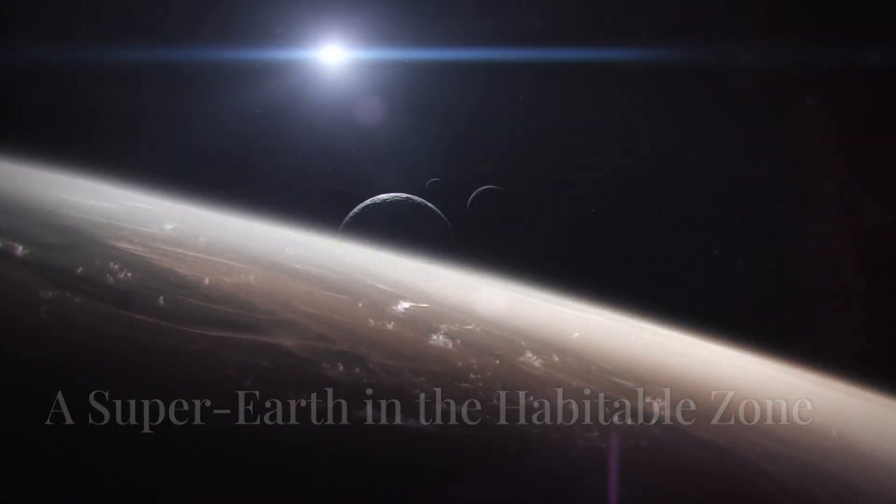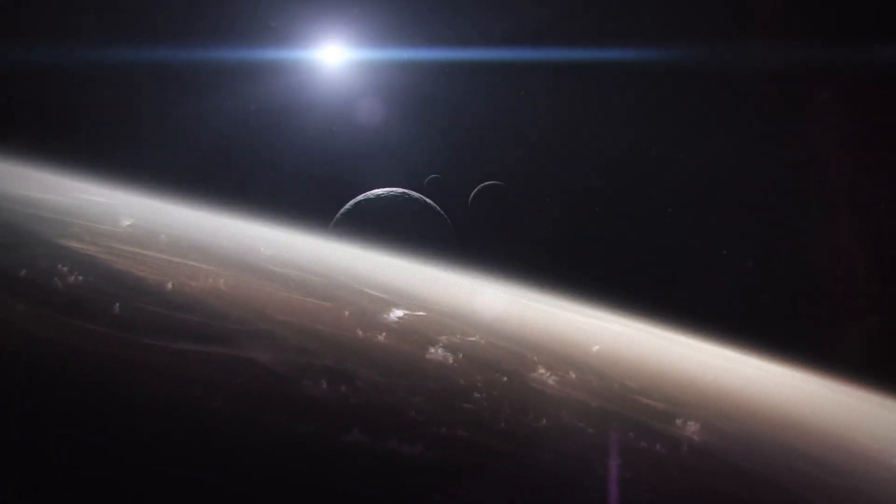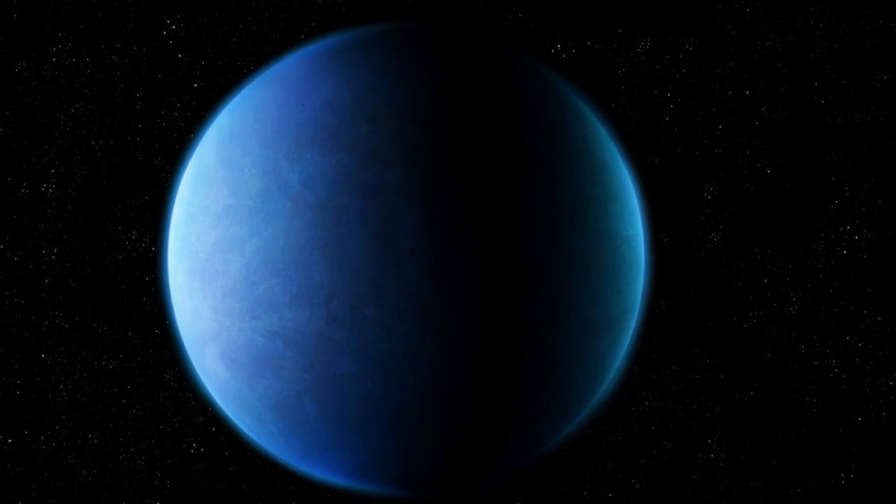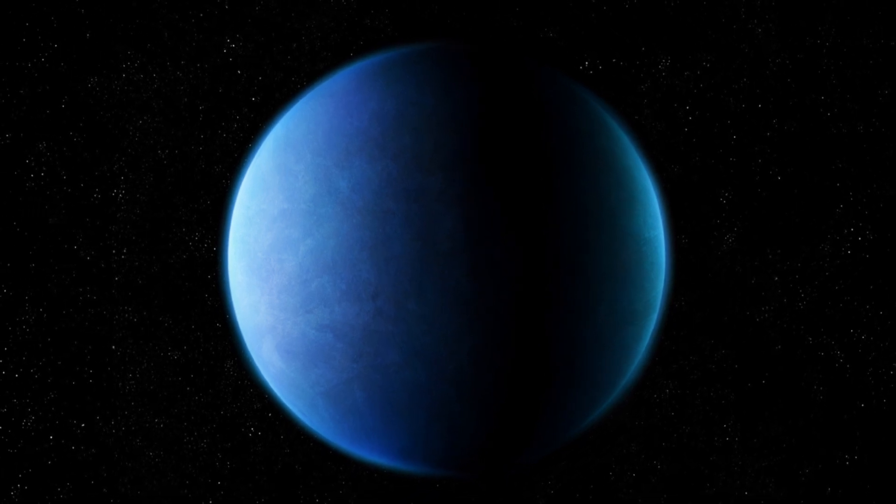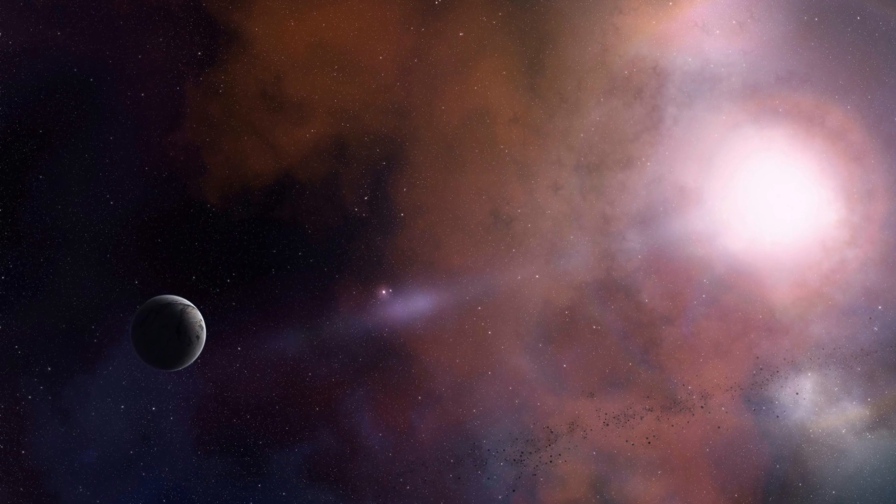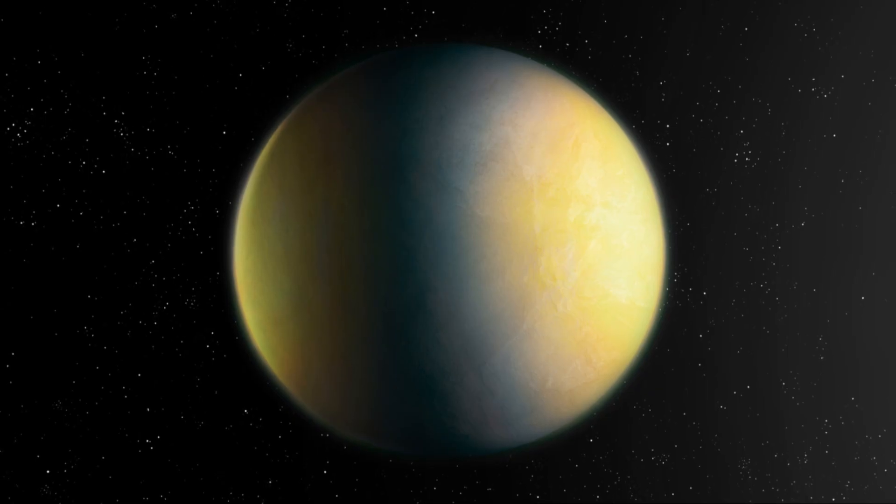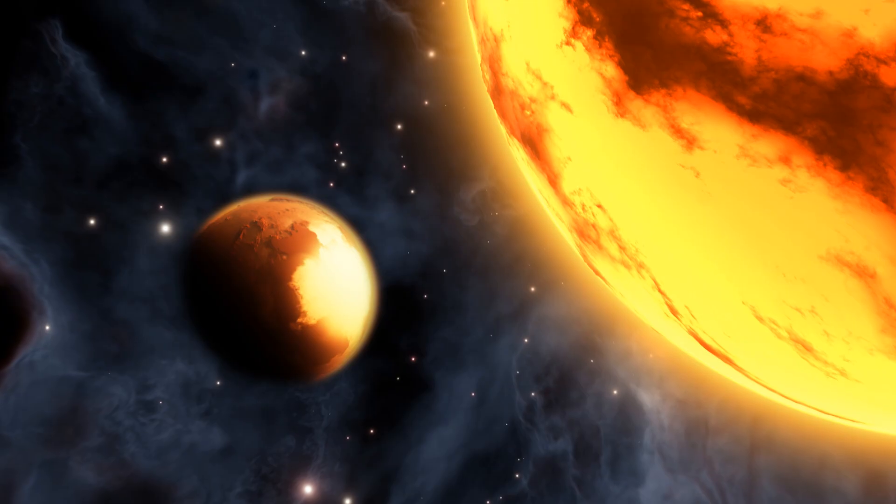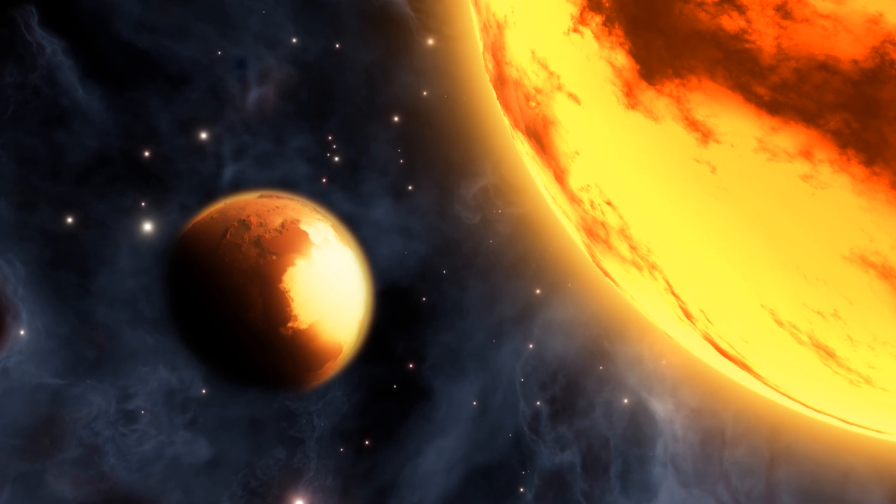Among the thousands of exoplanets discovered, HD 40307 G stands out as particularly intriguing. This planet, located about 42 light years away in the constellation Pictor, is a so-called Super Earth, meaning it is larger and more massive than Earth but smaller than Neptune.